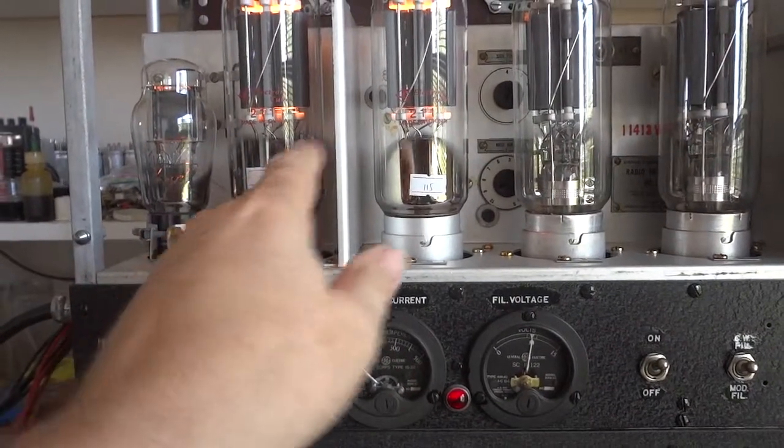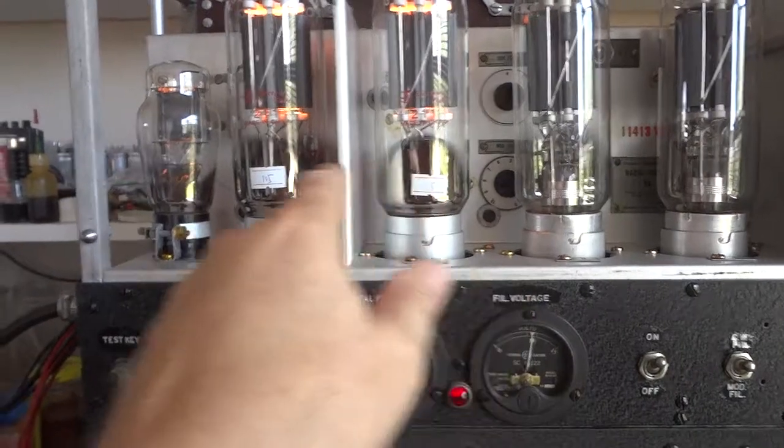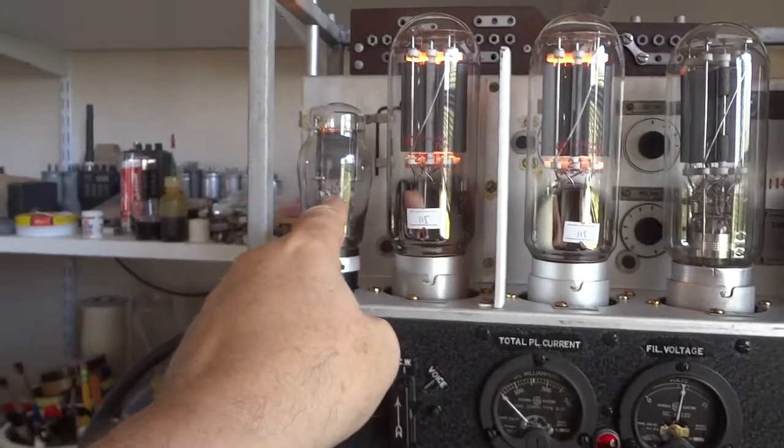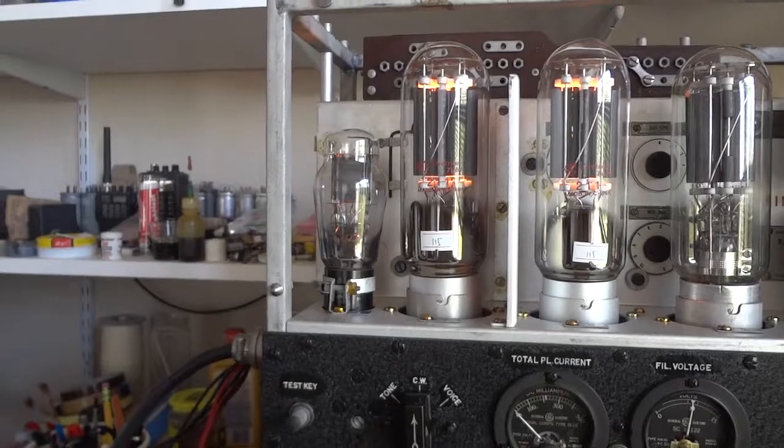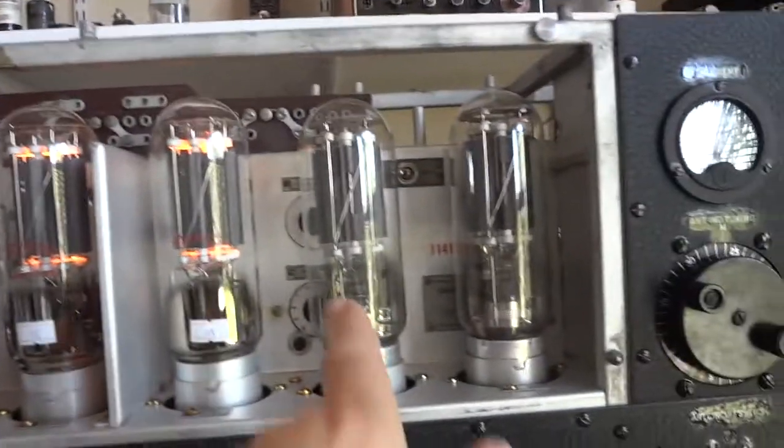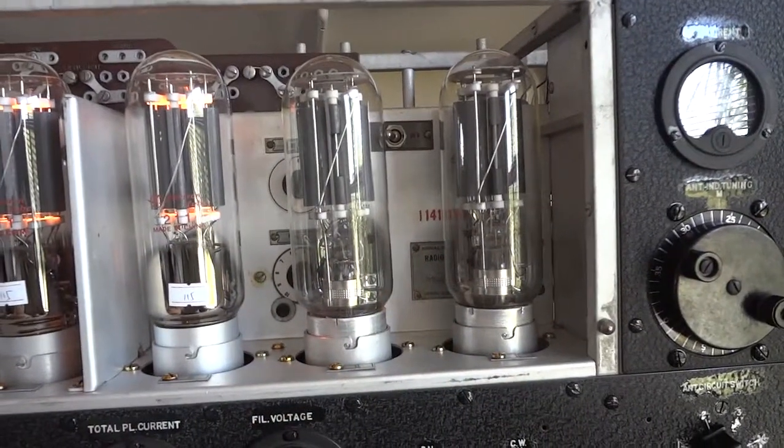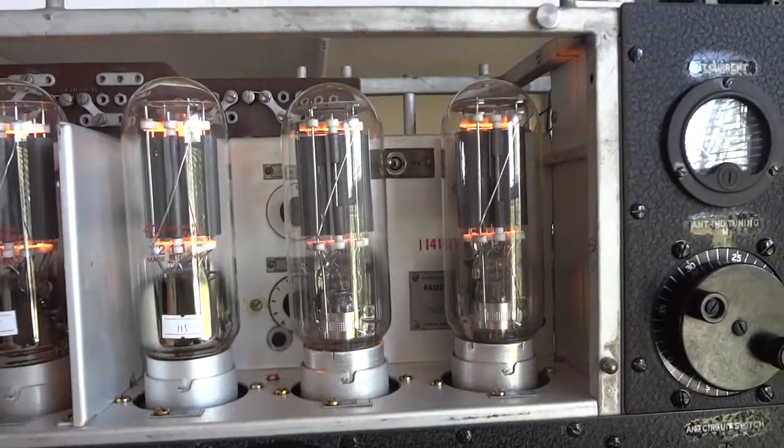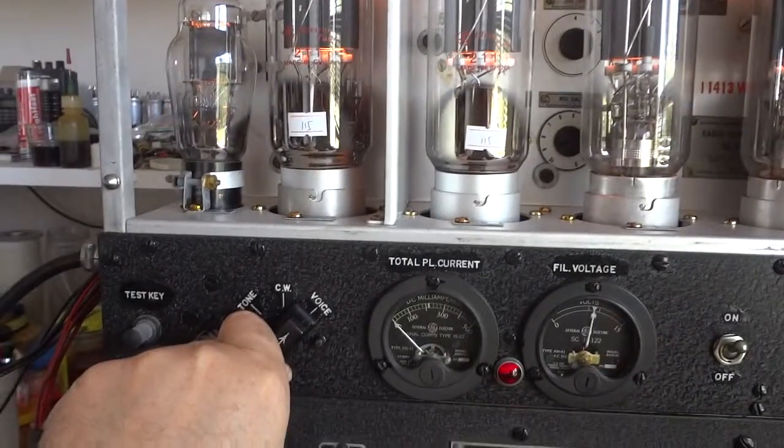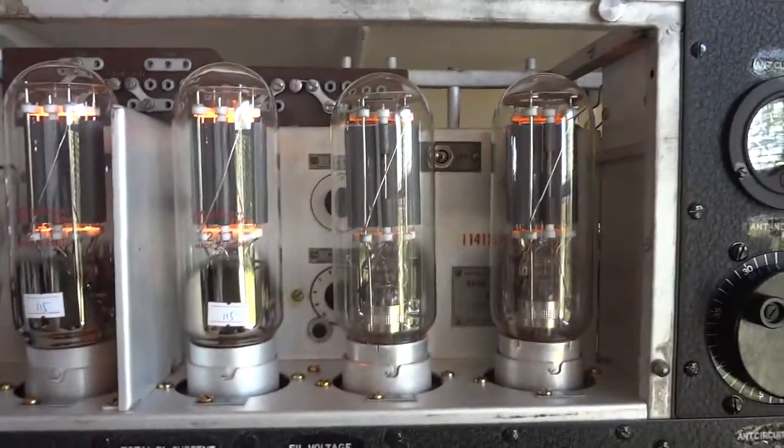This is the oscillator tube, this is the PA tube, that is the microphone preamp tube that's not doing anything right now. And the other two are off, they only come on when you switch to voice, but we're not gonna do that now.